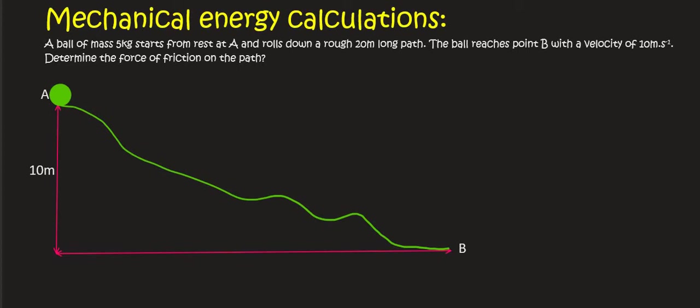Hello everyone. In this lesson we have a 5 kilogram ball that is going to start at A from rest and it's going to roll down this rough slope and reach point B which is on the ground at a velocity of 10 meters per second.